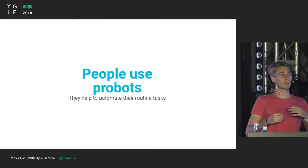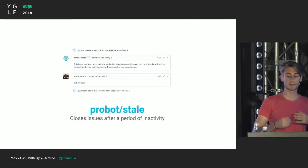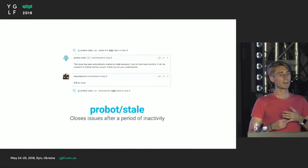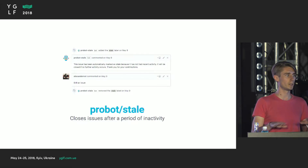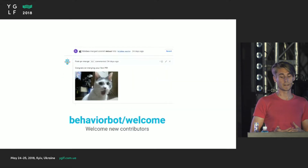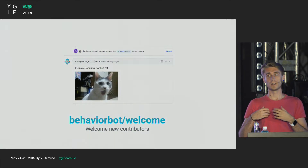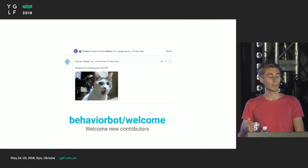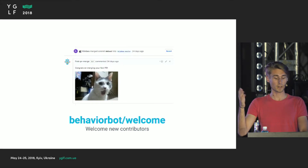People actually use robots to make their daily work easier and save a lot of time. For example, the most popular one is the Stale bot — it closes issues after some period of inactivity. If no one comments on an issue, it's no longer relevant, so it gets closed. Another example is the Welcome bot, which greets every new contributor to your repository — if a user opens an issue or pull request for the first time, the bot greets them.